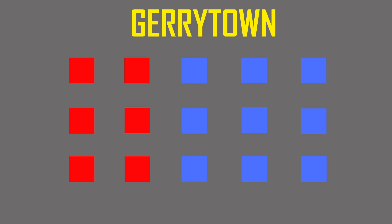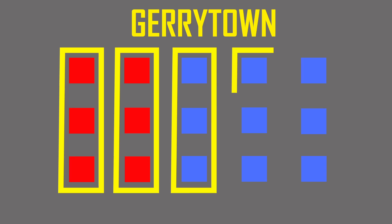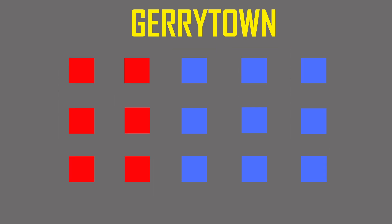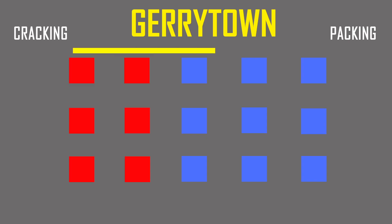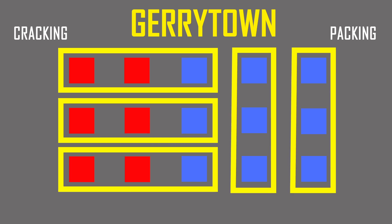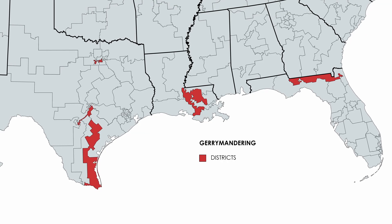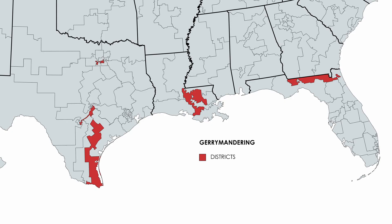Exactly how does gerrymandering work? Let's use Garytown as our example. In this town, there are six Republicans on the west side and nine Democrats on the east side. In an ideal world, the districts would be drawn so that it gives two Republican districts and three Democratic districts. However, by utilizing strategies such as cracking and packing, gerrymandering allows the people who create these boundaries to influence the votes. If the borders are drawn differently, you can end up with three Republican districts and two Democratic districts, even though there was a Democratic popular majority. In reality, these gerrymandered districts look quite irregular on a map.